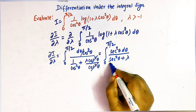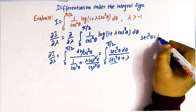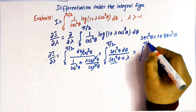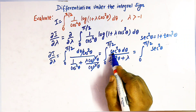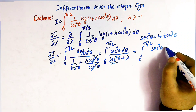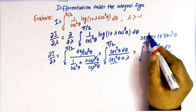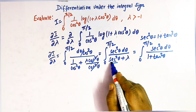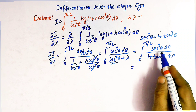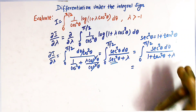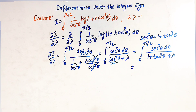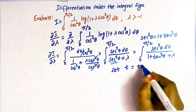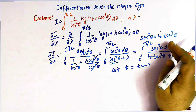Using the trigonometric identity sec²θ = 1 + tan²θ, we replace sec²θ in the denominator to get the integral from 0 to π/2 of sec²θ/(1 + tan²θ + λ) dθ. Now we apply integration by substitution, letting t = tan θ.